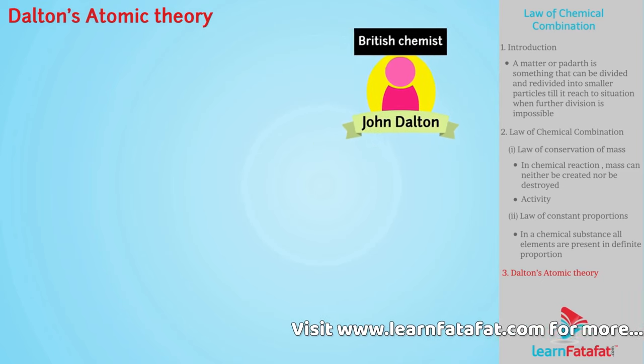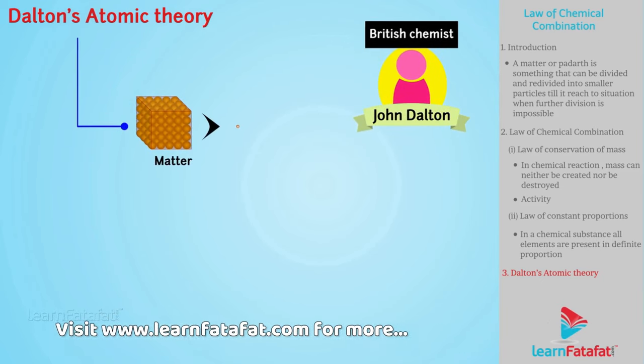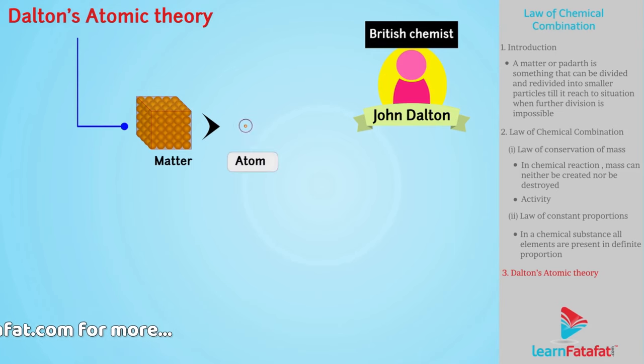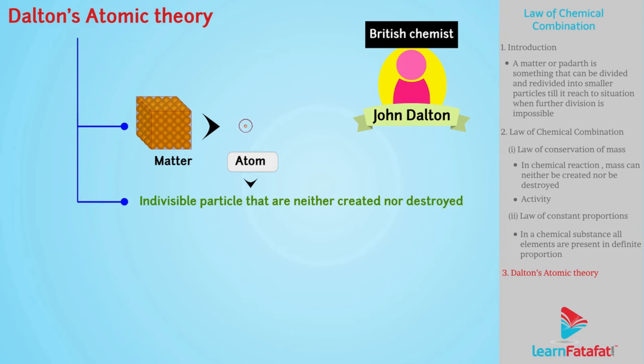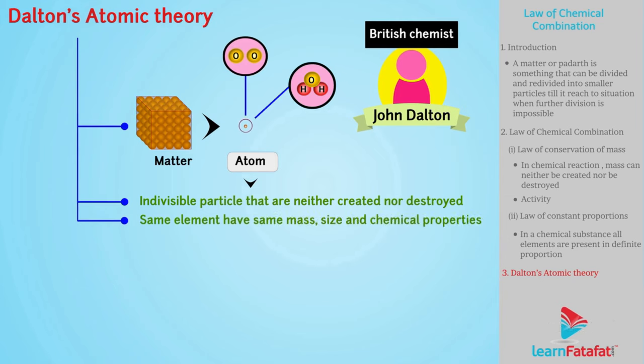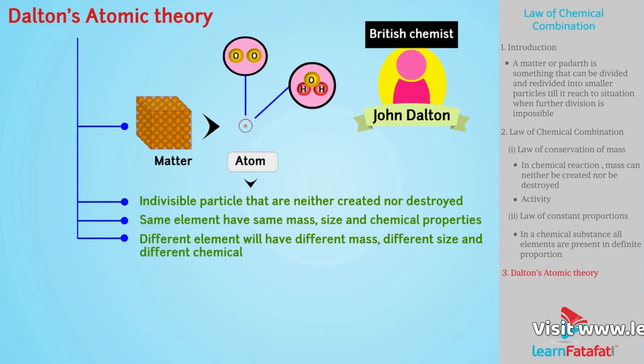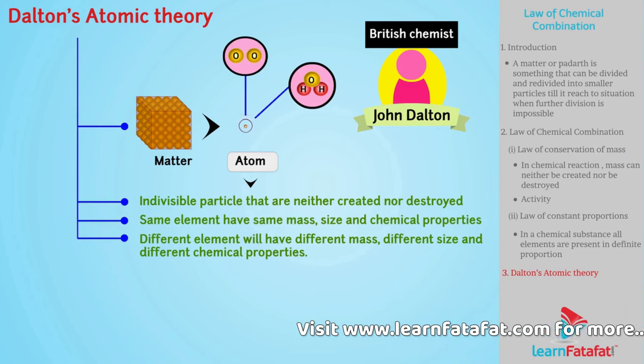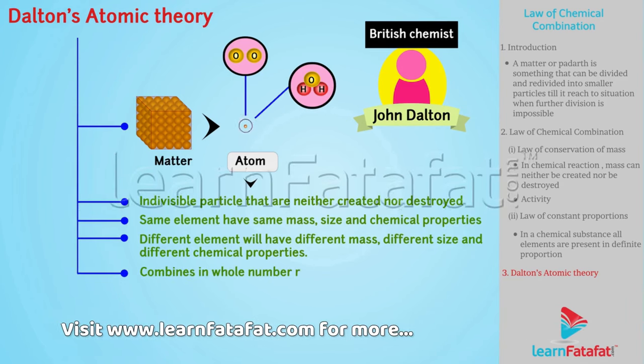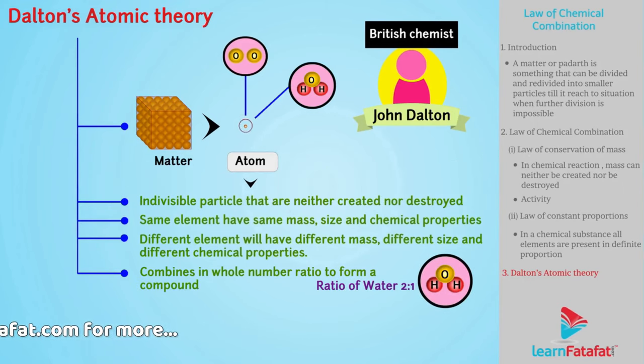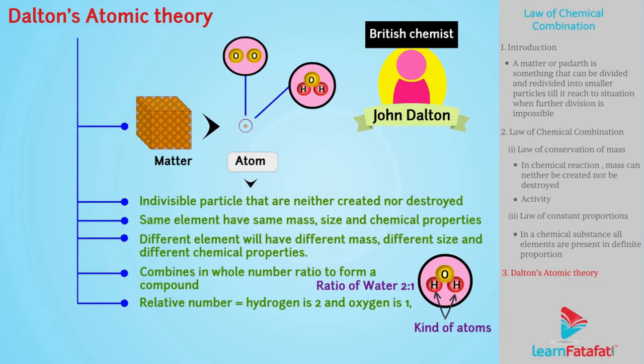According to Dalton's atomic theory, matter is made up of tiny particles called atoms. Atoms are indivisible particles that are neither created nor destroyed. They are just rearranged during a chemical reaction. Atoms of same element have same mass, size and chemical properties. Atoms of different element will have different mass, different size and different chemical properties. Atoms combine in whole number ratio to form a compound. The relative number and kind of atoms are constant in compounds.